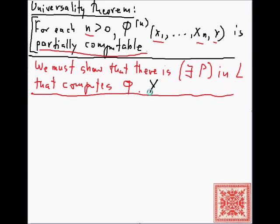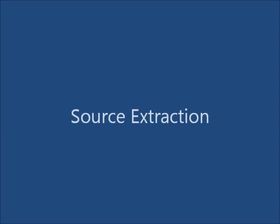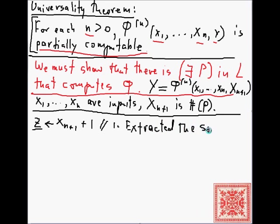Effectively we would like to add this macro to our language L: Y = phi_n(X1 through Xn, X_{n+1}), where X1 through Xn are inputs to an arbitrary program whose number is the value of X_{n+1}. The first thing our operating system will do is take the value of X_{n+1} and extract the source code, so Z will contain the number of the source code — we've extracted the source code of this arbitrary program P.